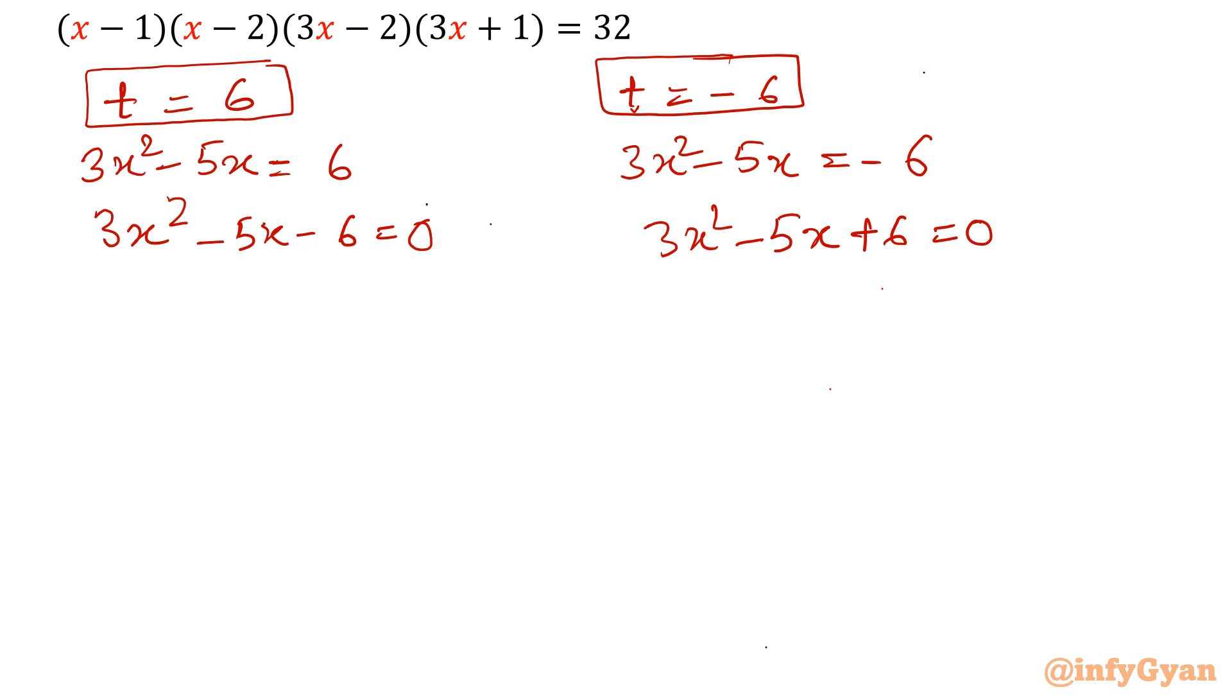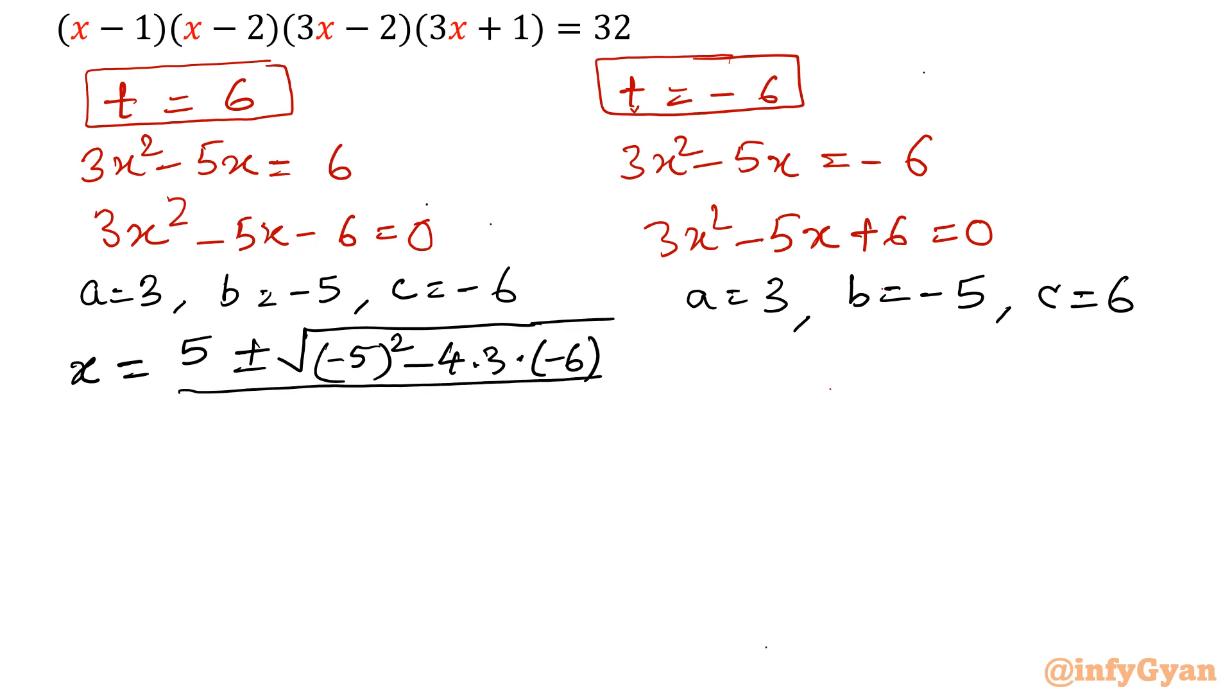Now let's apply the quadratic formula. For the first equation, a equals 3, b equals negative 5, c equals negative 6. For the second equation, a equals 3, b equals negative 5, c equals 6. I am solving both equations in parallel so you can see the difference. x equals (-b ± √(b² - 4ac)) / 2a.